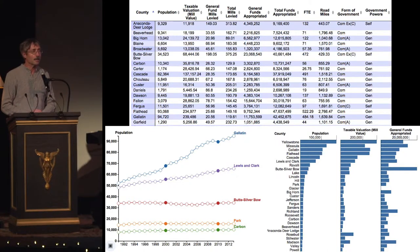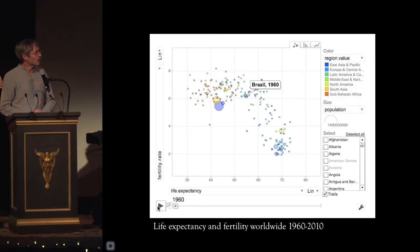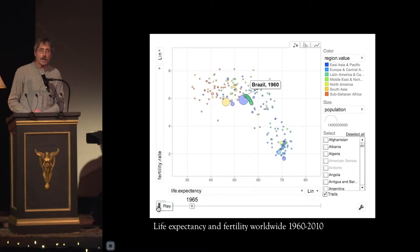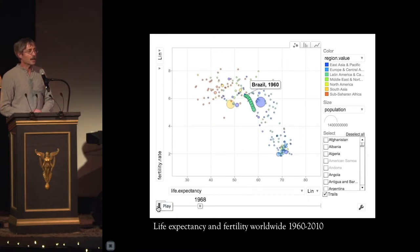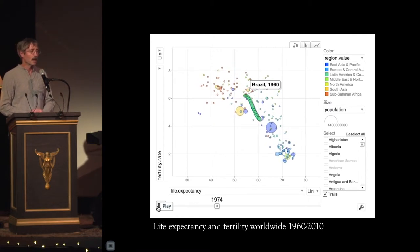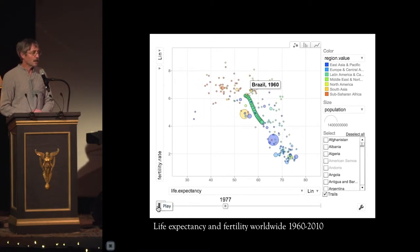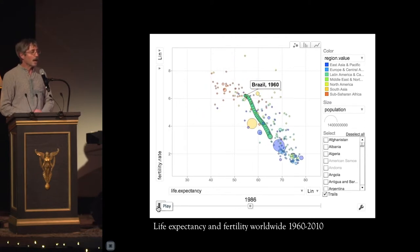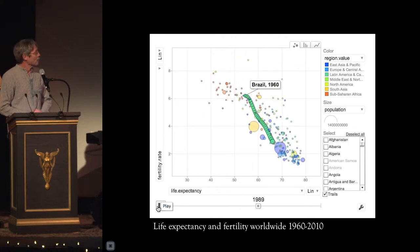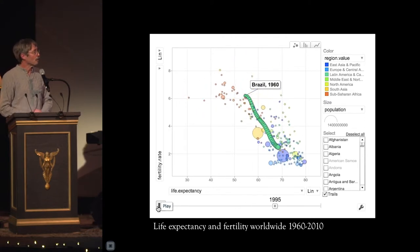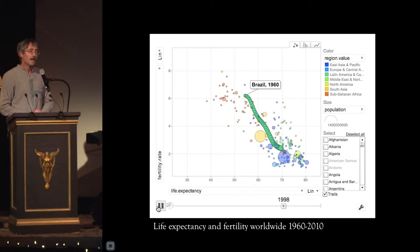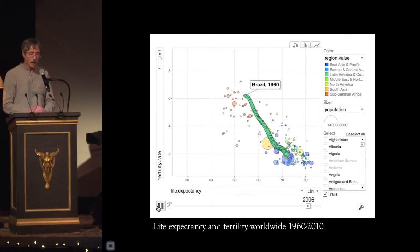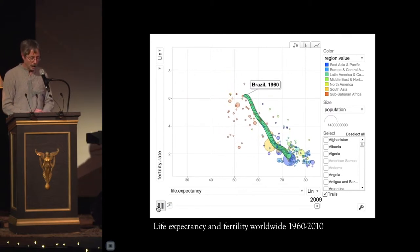We usually try to deal with this by visualizing it in charts. But as the amount of data and the interrelationships among the data becomes more complex, visualizations become hard to follow. This is showing lifespan and fertility across the world over 50 years. It's hard to appreciate this without spending some real mental effort on it.